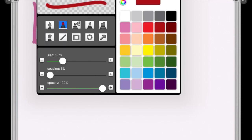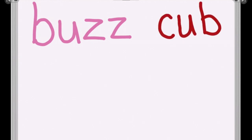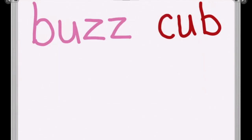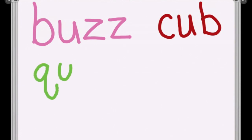Next one, the word is 'cub': C... uh... B. Cub. Next one: 'quiz.' Get Q's best friend in there. Do you remember what Q's best friend is? U! Quiz.